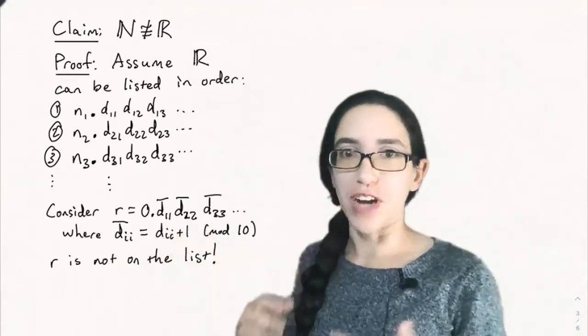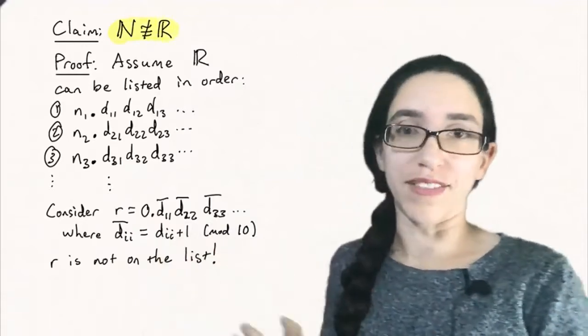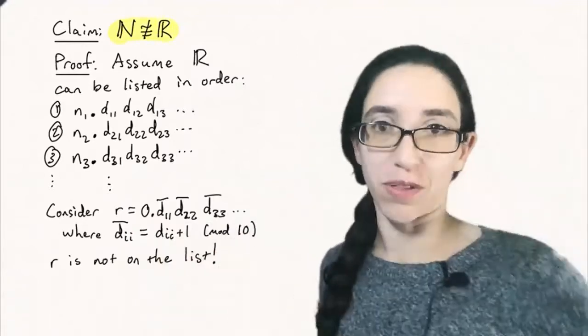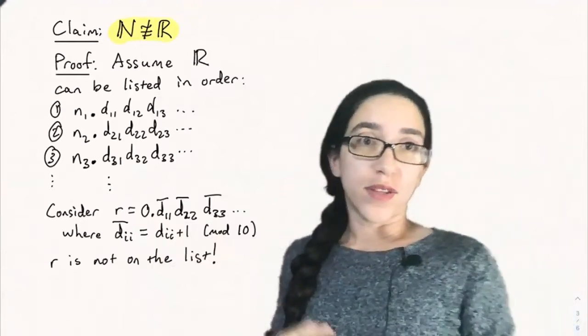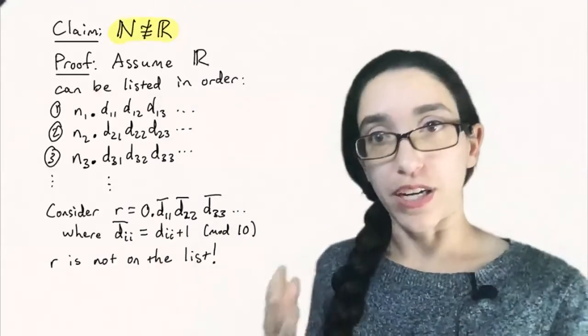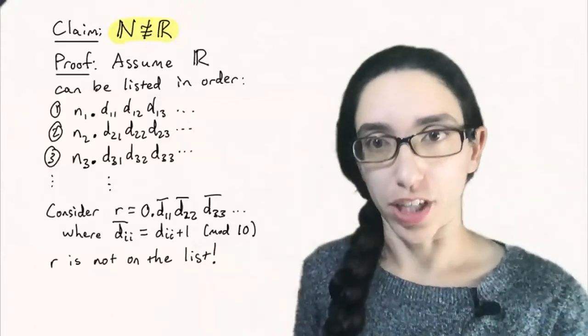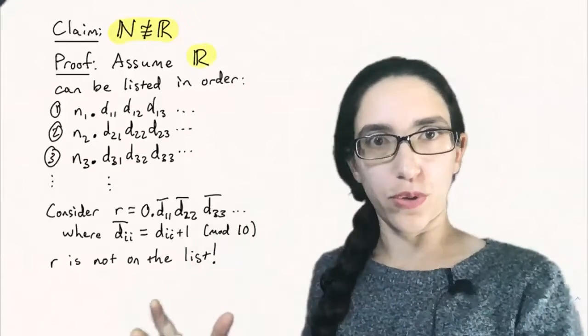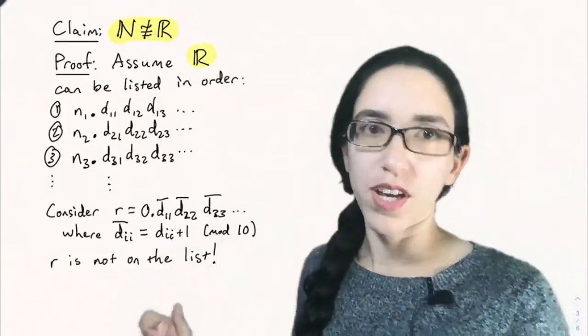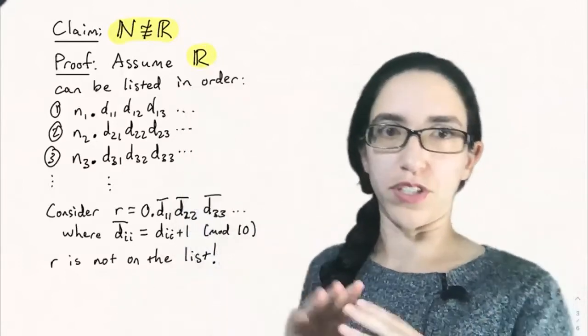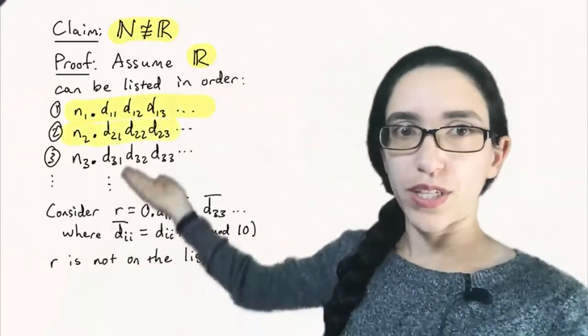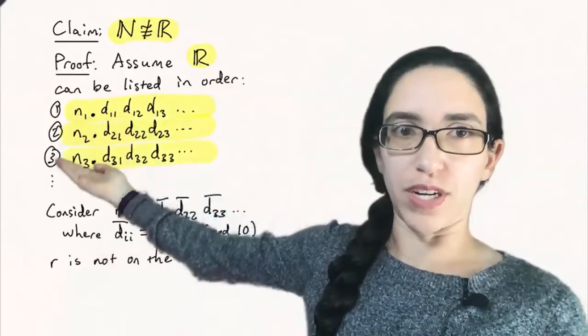But interestingly, the natural numbers and the reals do not have the same size. The reals are actually a bigger size of infinity than all the three sets we looked at before. And the proof of this is a classic proof by contradiction. It's called Cantor's diagonal argument. And the proof by contradiction says we're going to assume it's true and show that something goes terribly wrong. So let's assume that the real numbers can be listed in order. That's what we need to have a bijection with the natural numbers. So let's list them as some integers n1,